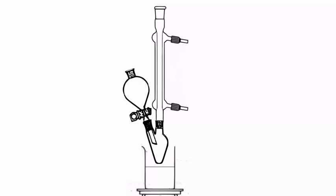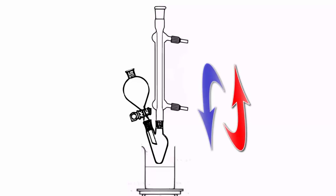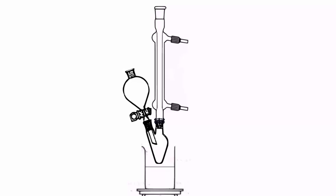Then I attach a Liebig condenser in a vertical position that will condense any vapor leaving the flask and return it to the flask. Attach one of these Keck clips to fasten the Liebig condenser securely to the flask.